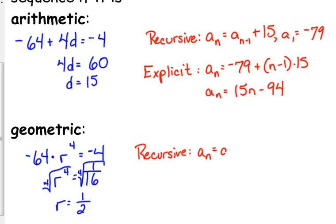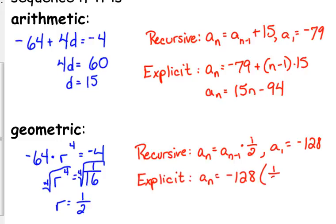Our recursive is a sub n is equal to a sub n minus 1 times 1 half. What would be our first term? Negative 128, because we're going backwards, so you do the opposite. If we multiply by 1 half, going backward is multiply by 2. The explicit would then be a sub n equals the first term, negative 128, times the common ratio, 1 half. A lot of times when they're fractions, they put them in parentheses, to the n minus 1.